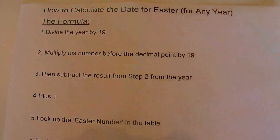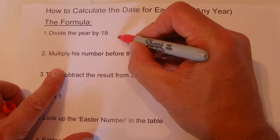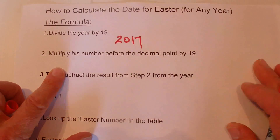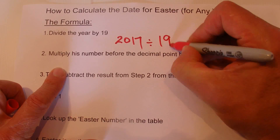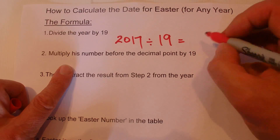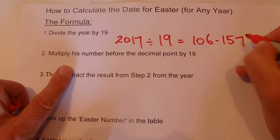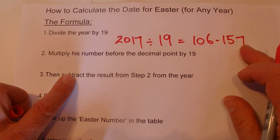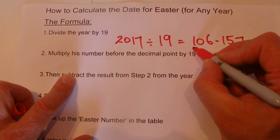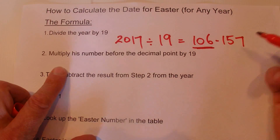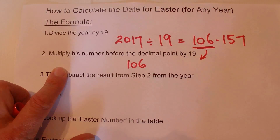The first step in the formula is to divide the year by 19. For this video I'm going to show you how to work out when Easter is for 2017. If we divide that by 19, we come up with a figure of 106.157 — there are more digits after it, but we're not interested in anything after the decimal point. We're only interested in the number before the decimal point, so we'll take this 106 and pop it down there.